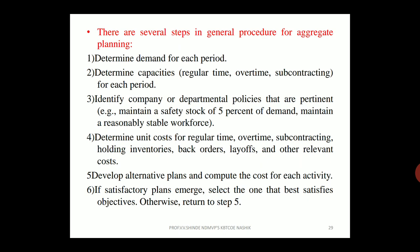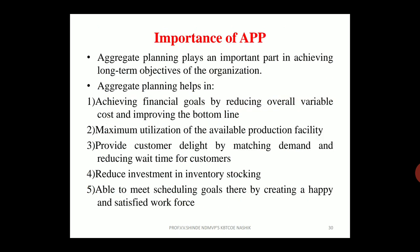Step five: develop alternative plans and compute the cost for each activity. Step six: if a satisfactory plan emerges, select the one that best satisfies the objectives; otherwise, return to step five. These are the several steps involved in Aggregate Production Planning.